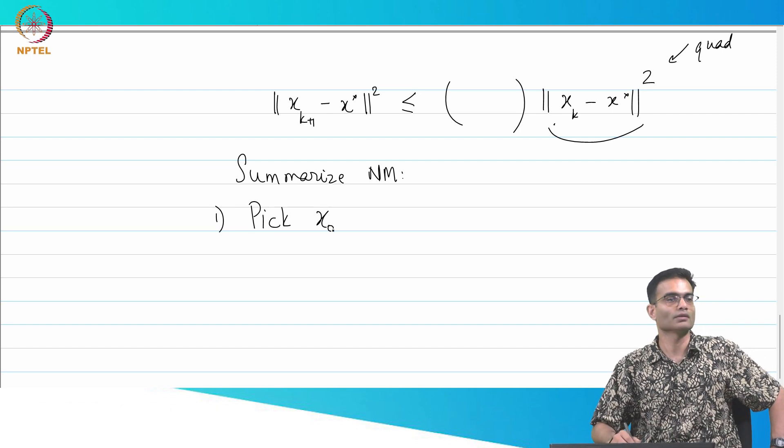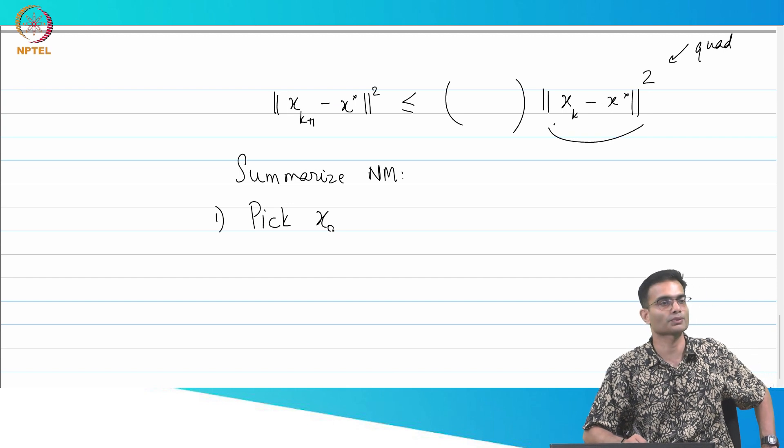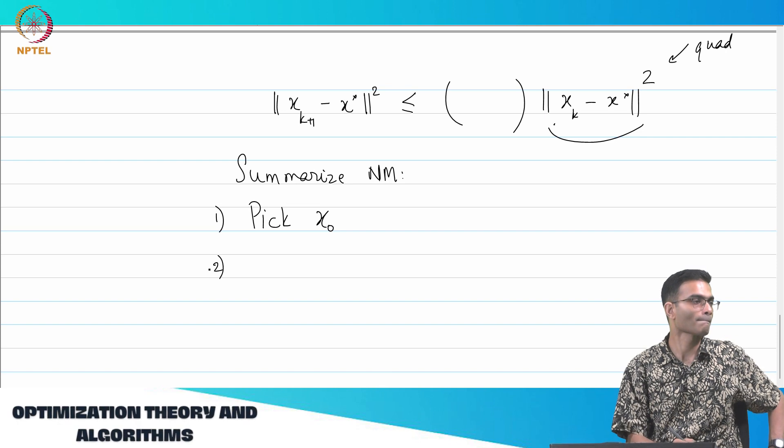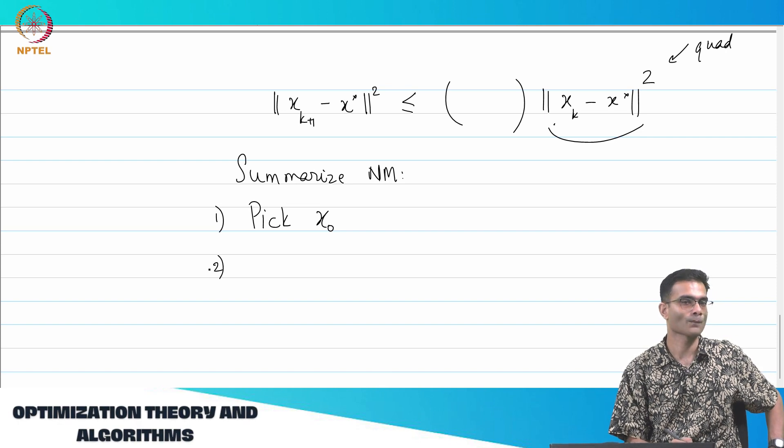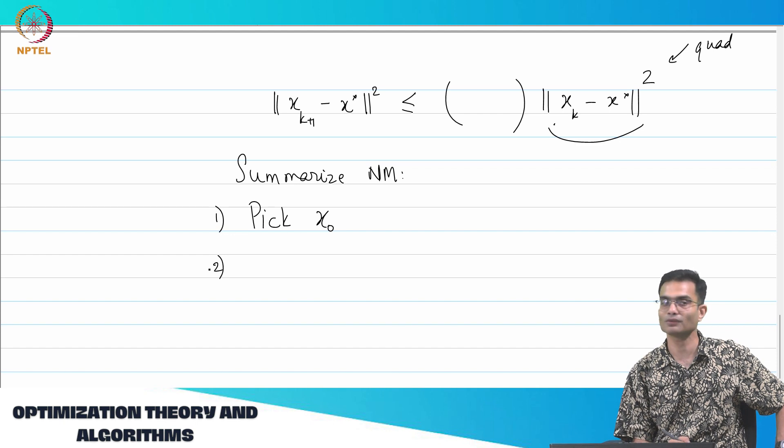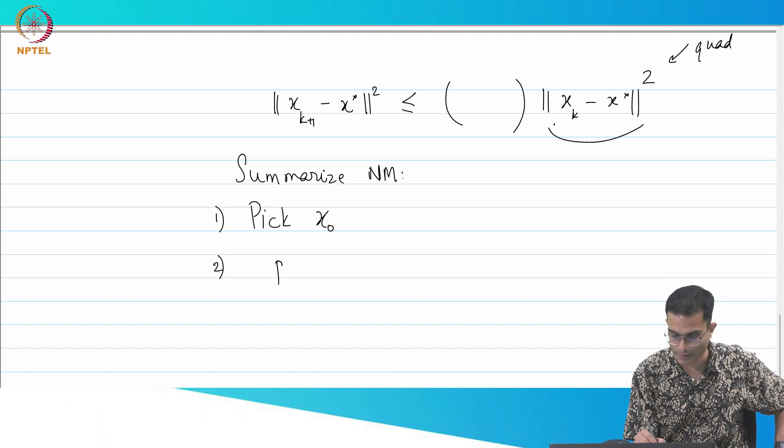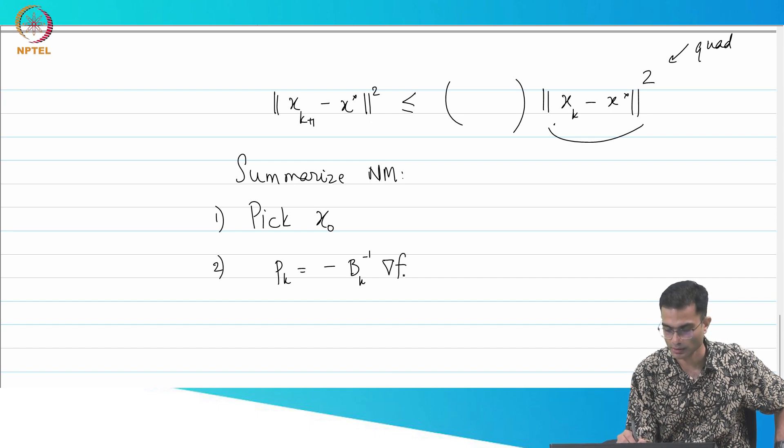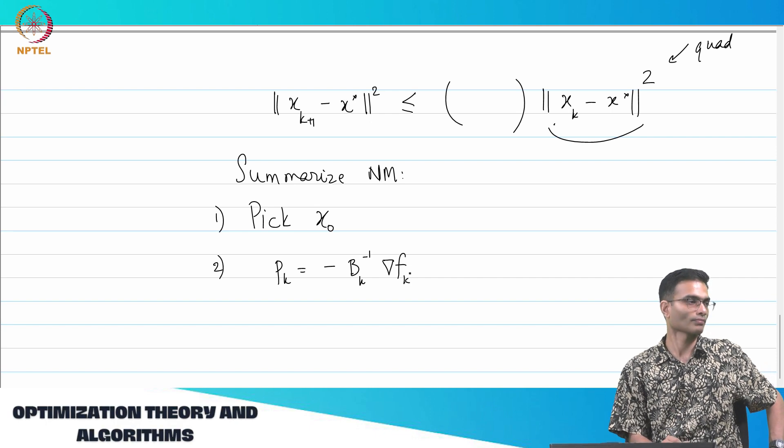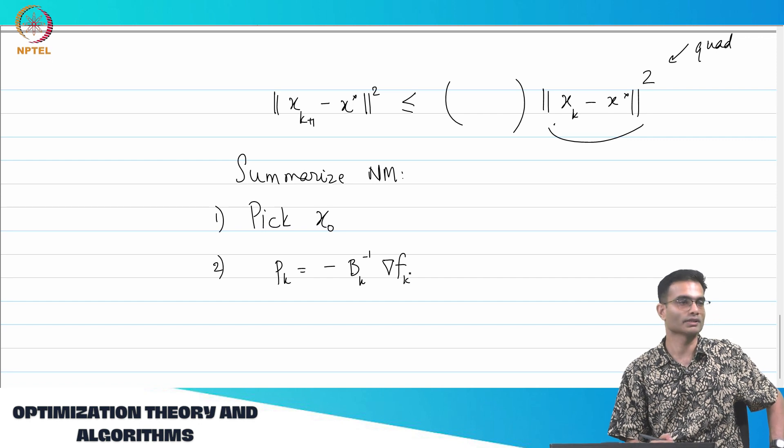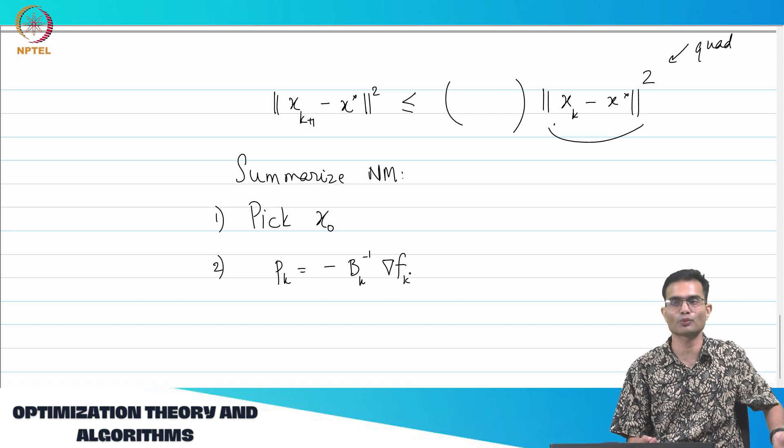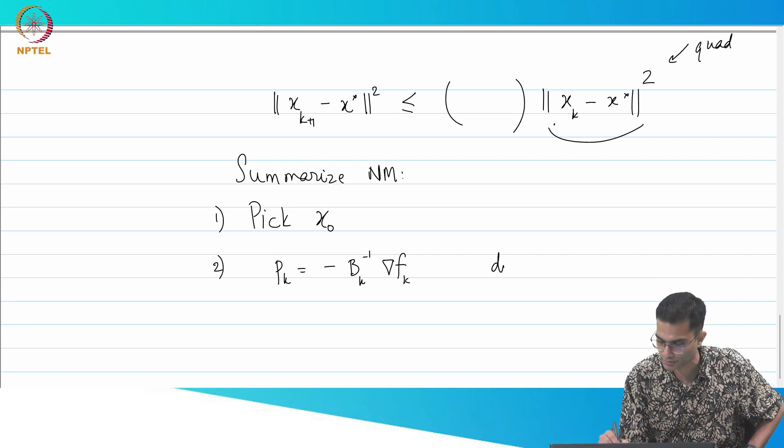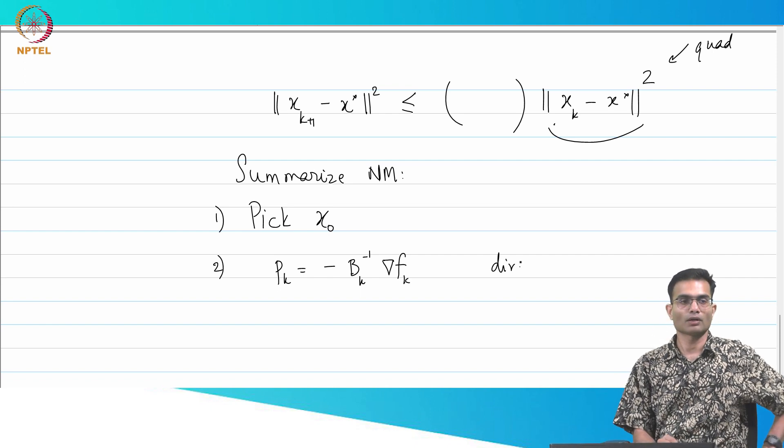This could be randomly generated or it could be from some intuition about the problem. Next, what do we do? I need to know in which direction to walk. Therefore, I need my pk. This was my direction. What do I do next?